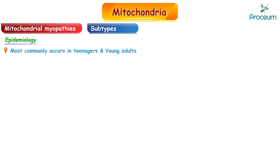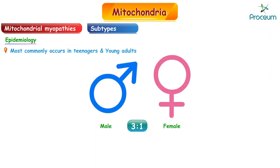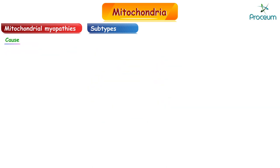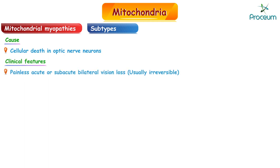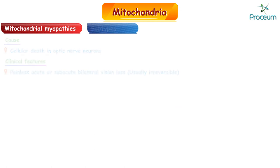LHON most commonly occurs in teenagers and young adults, with a male-to-female ratio of about 3 to 1. The cause is cellular death in the optic nerve neurons. Clinical features are painless acute or subacute bilateral vision loss, which is usually irreversible.